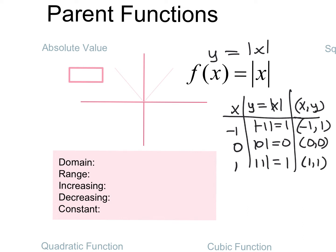Now I'm going to graph these three ordered pairs. I can say 0, 0 is here; 1, 1 is here. Once you graph these three points, you need to memorize the shape it takes on. When I connect the points, I know absolute value will always be a V shape. Remember, if there's no open circle at the end of the line, that meant it kept on going. So this V shape for the absolute value graph is going to eventually get wider and wider.